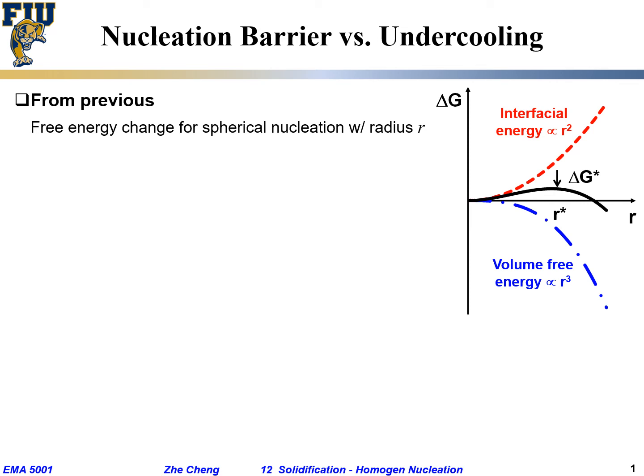Now let's consider the energy aspect. We still have this plot. The free energy change for nucleation with radius is given by ΔG equals the volume term, 4/3 πr³ times volume free energy change with negative sign, plus 4πr² the area times the interfacial energy term.